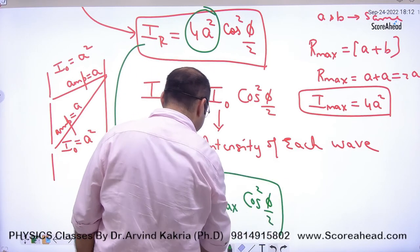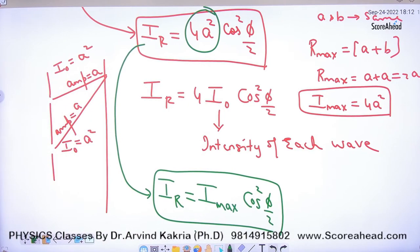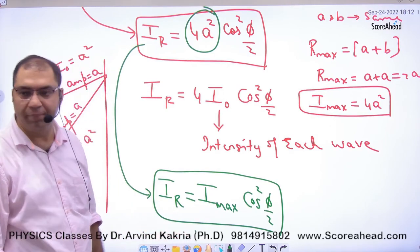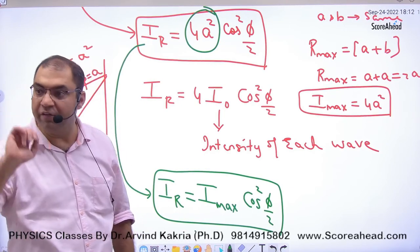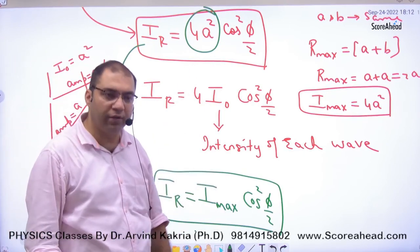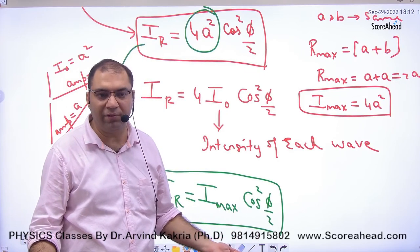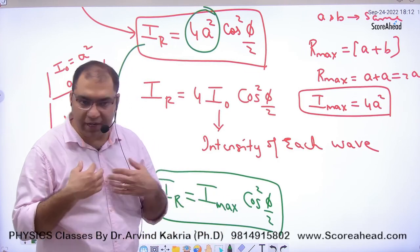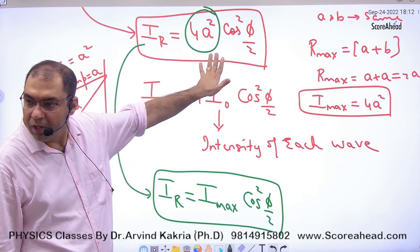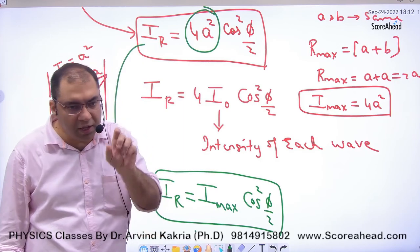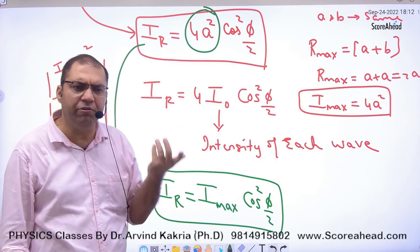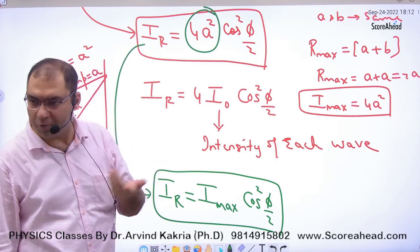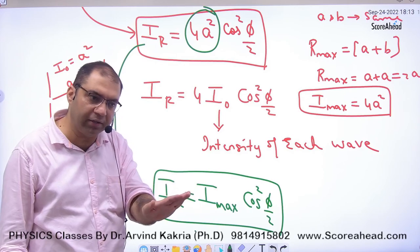कोई doubt? तो अब तीन formulas हैं: amplitude की form में 4a², हर wave की intensity I₀ की form में 4I₀, और I_max की form में I_max·cos²(φ/2)। इन्हें अलग-अलग याद करने की जरूरत नहीं — मैंने base formula याद किया हुआ है और question में जो variation आती है उसके हिसाब से formula बना लेता हूं। So if you can do it, there is no problem. But what is its application? How to use it?